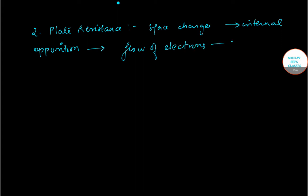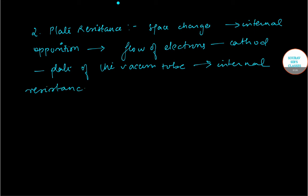This is done from the cathode to the plate of the vacuum tube and gives rise to an internal resistance, which is termed as the plate resistance.